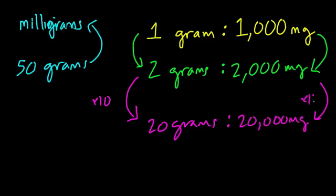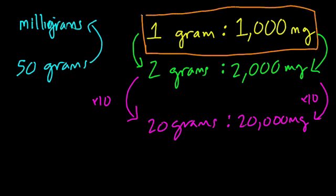And essentially what's happening is, if I multiply my amount of grams by something, I must always rescale the milligrams by the same amount. So if I look at my unit ratio here, this is a unit ratio because it tells me how much milligrams are equal to 1 gram.